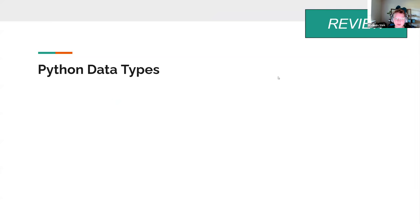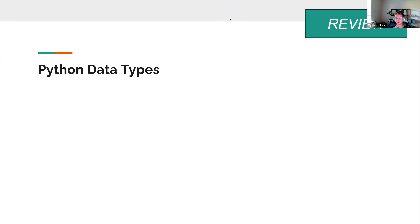Let's start with a review of Python data types. When we left off last time, we talked about data types. Can anyone remember the four data types we talked about? Go ahead and put it in the chat. We've got integer, float, string, and — one more that has kind of a funny name — Boolean.